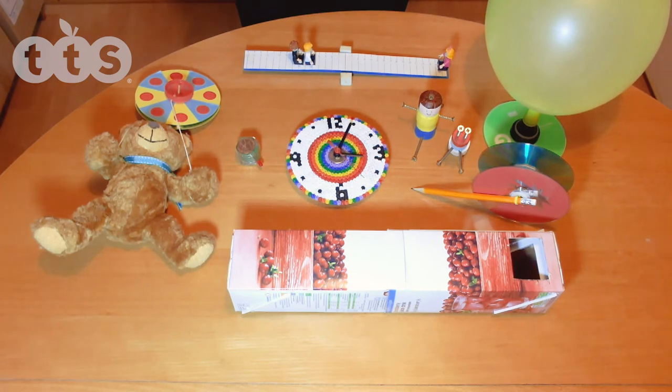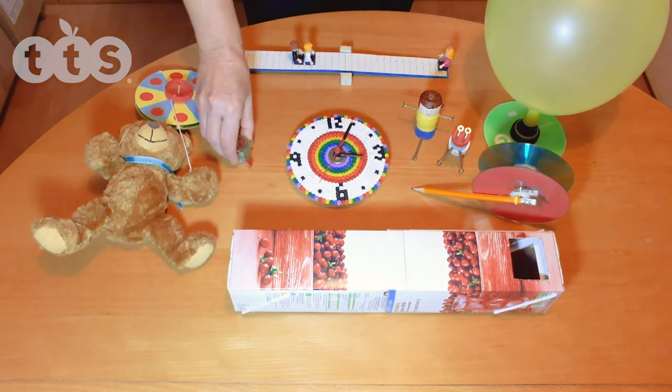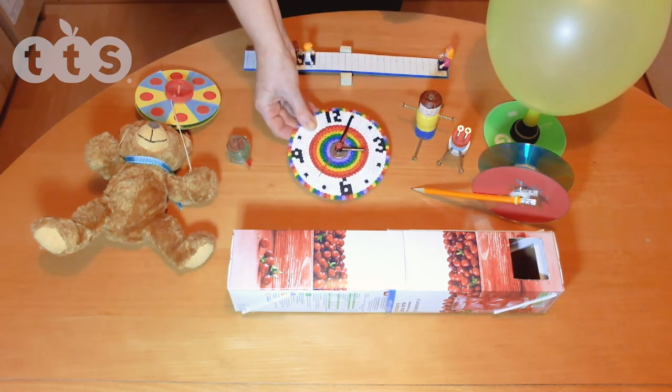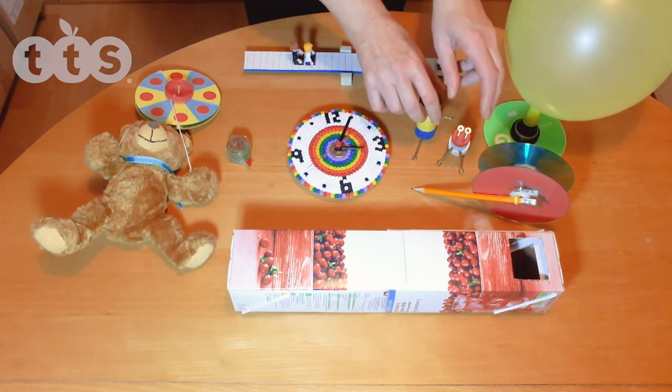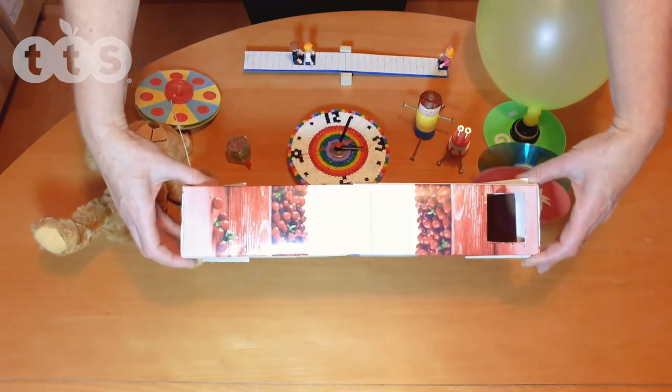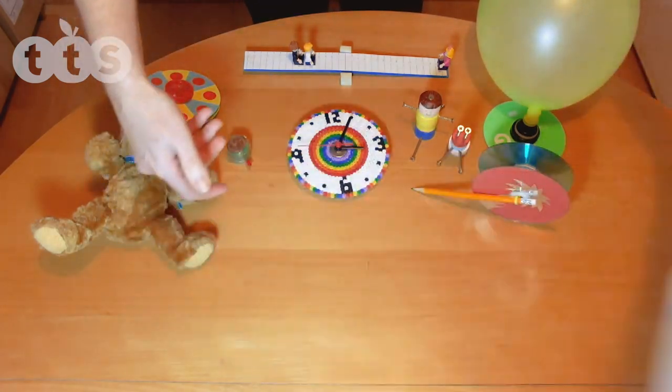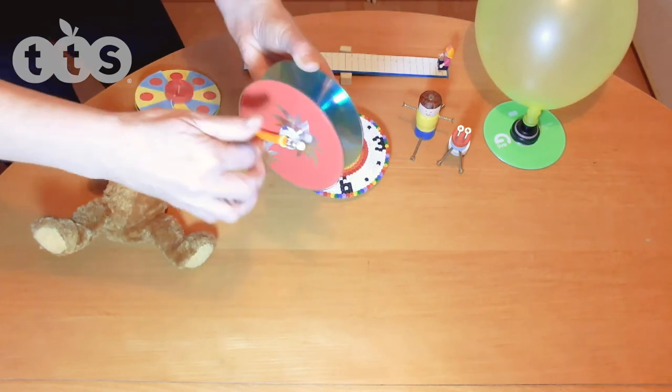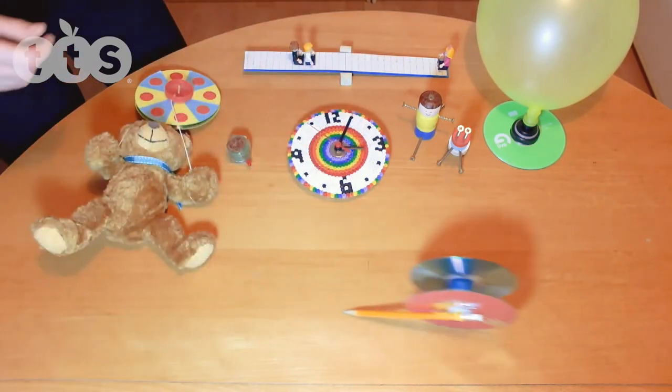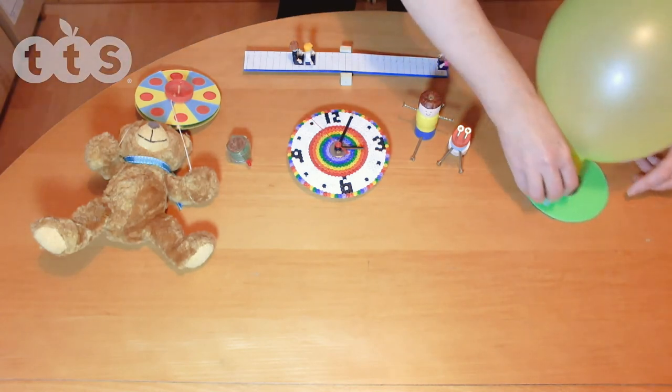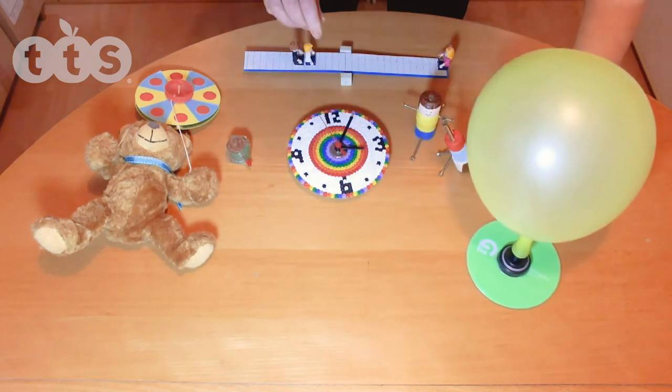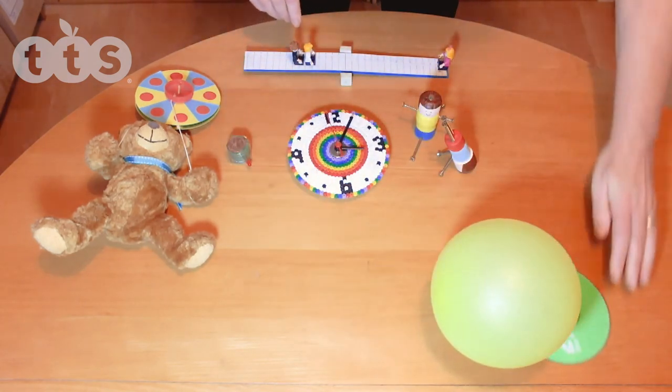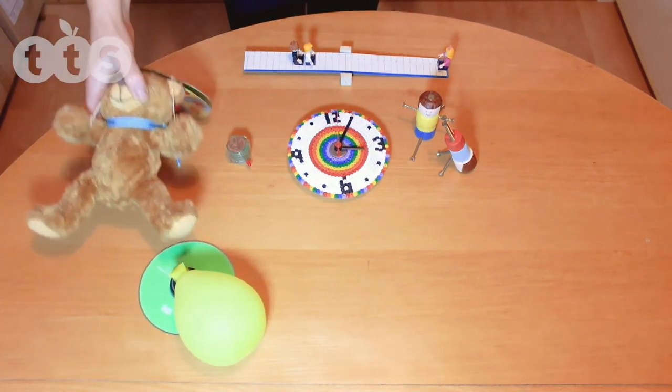This project is taken from the TTS Key Stage 2 STEM Activity Cards. Here are some more examples of projects taken from these cards. Coin battery, clock made out of hammer beads, seesaw, cork gymnasts, periscope, seed eraser, balloon hovercraft, periscope, and a teddy zip wire.